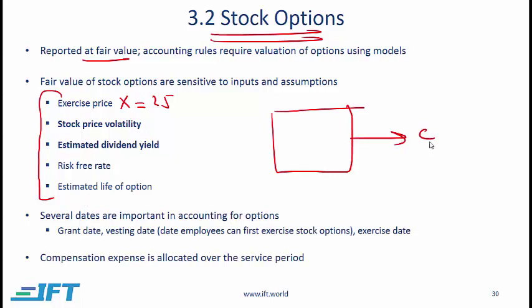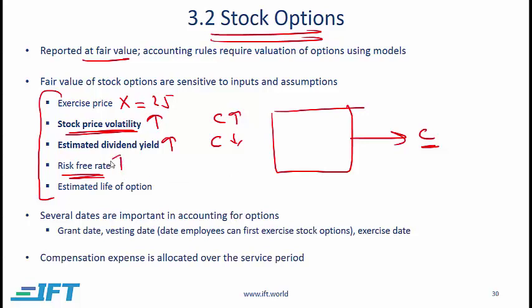In coming up with the option price, we need to assume a share price volatility. The higher the volatility we assume, the higher the value of the call option. So if a company wants to show a high expense it can increase assumed volatility; if it wants to show a low stock option expense, it can assume a relatively low volatility. The estimated dividend yield is another subjective variable — the higher the estimated dividend yield, the lower the value of the call option. The risk-free rate also has an impact, though not a very strong one: a higher risk-free rate means a slightly higher call option price. The longer the estimated life of the option, the higher the value of the call option.